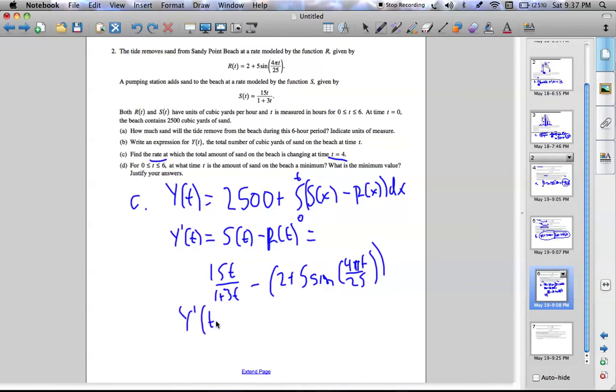Plugging in 4 for T, on the calculator, you can find that it is negative 1.909 cubic yards per hour.